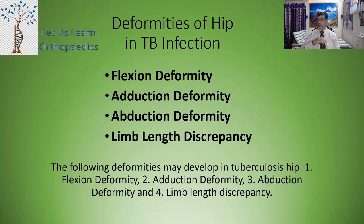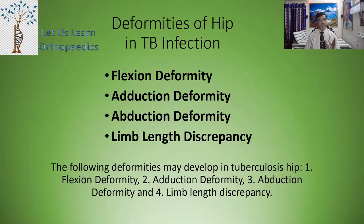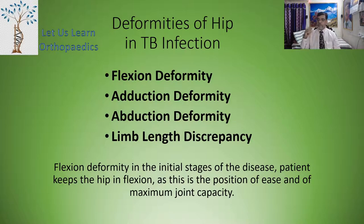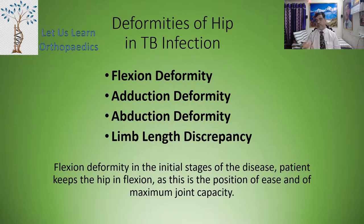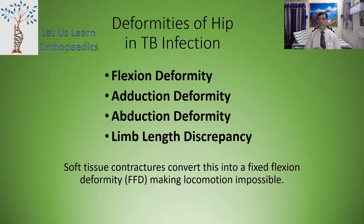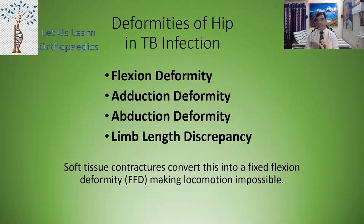The following deformities may develop in tuberculosis of the hip: flexion deformity, adduction deformity, abduction deformity, and finally there may be a limb length discrepancy. In the initial stage of the disease, the patient keeps the hip in flexion as this is the position of ease and of maximum joint capacity. Soft tissue contractures convert this into a fixed flexion deformity — labeled FFD.